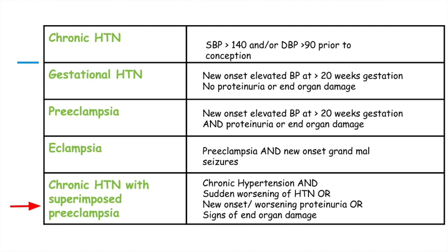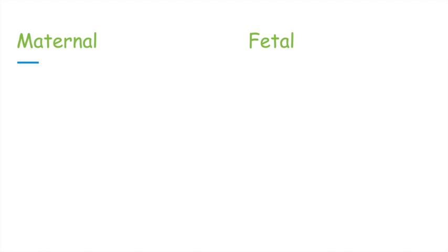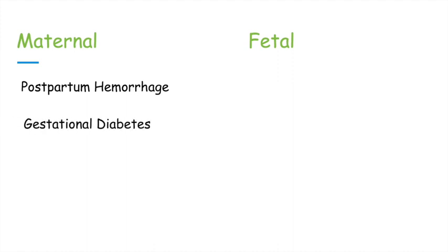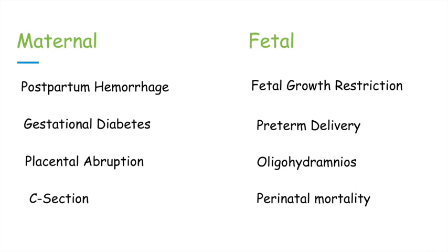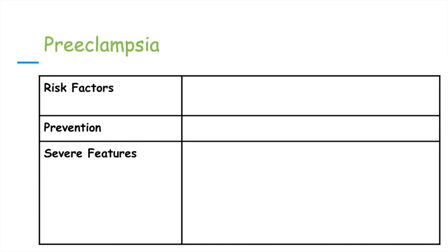There are many complications for hypertensive disorders in pregnancy. Maternal complications include postpartum hemorrhage, gestational diabetes, placental abruption, and C-sections. Fetal complications include fetal growth restriction, preterm delivery, oligohydramnios, and perinatal mortality. It's very important to identify types of hypertensive disorders and know how to treat them to prevent or minimize these complications.